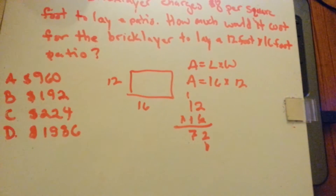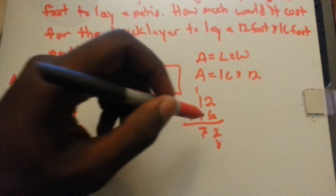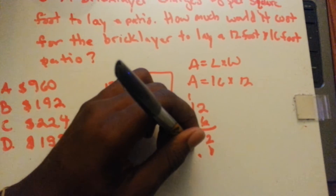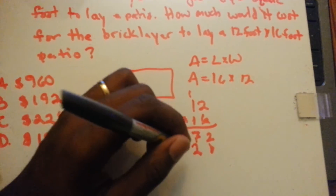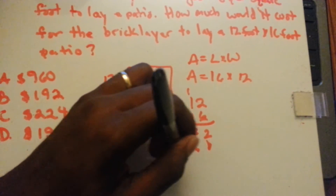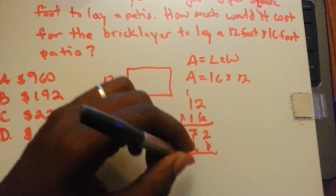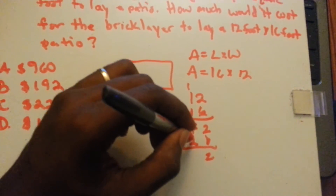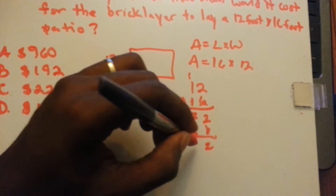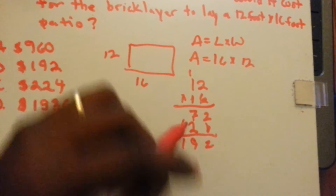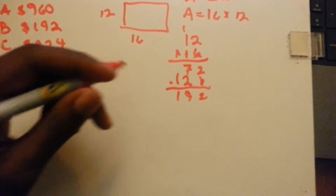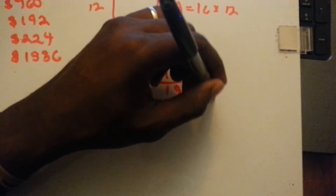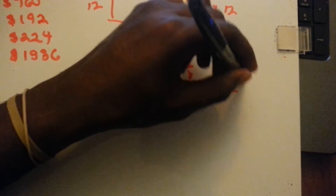Bring down the 0. 1 times 2 is 2. 1 times 1 is 1. 2 plus 7 is 9. Bring down the 1. So we have 192 square feet.